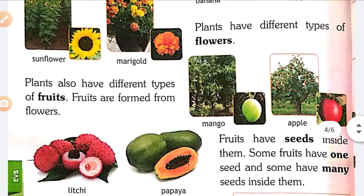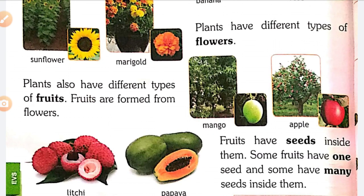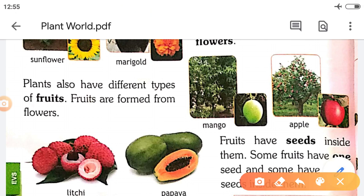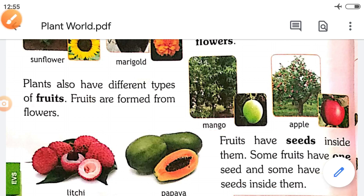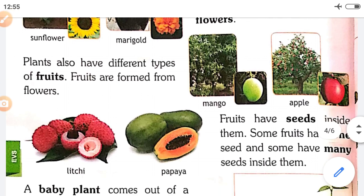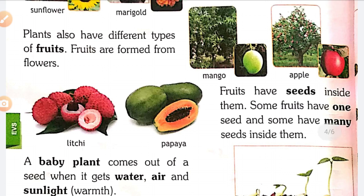Plants also have different types of fruits. Fruits are formed from flowers. Examples: mango, apple, oranges, grapes, papaya, lychee, guava, etc. Keep in mind — fruits are formed from flowers.